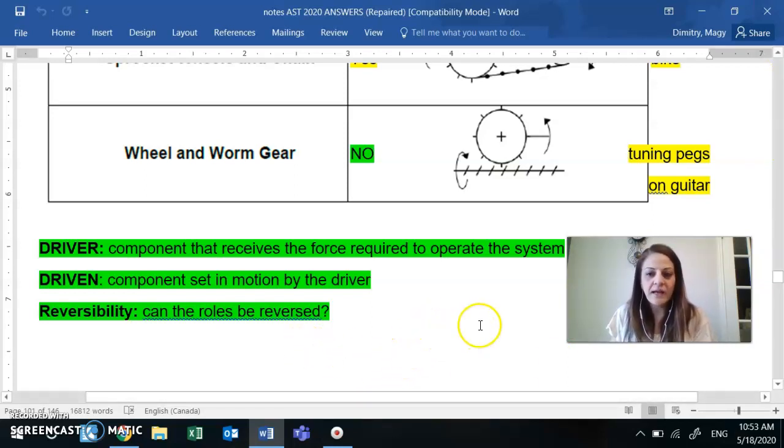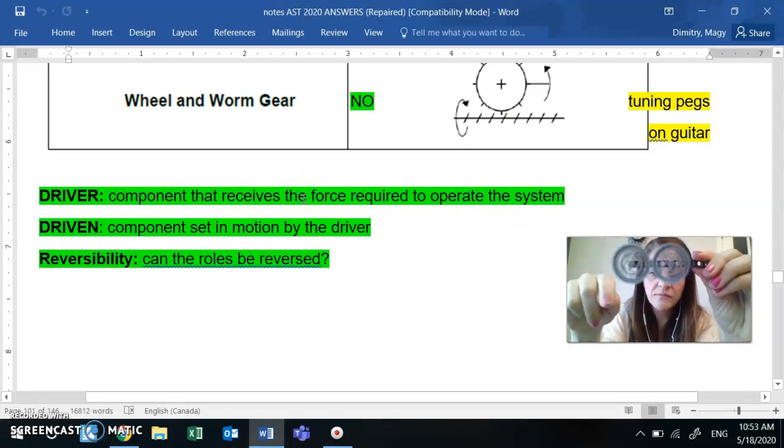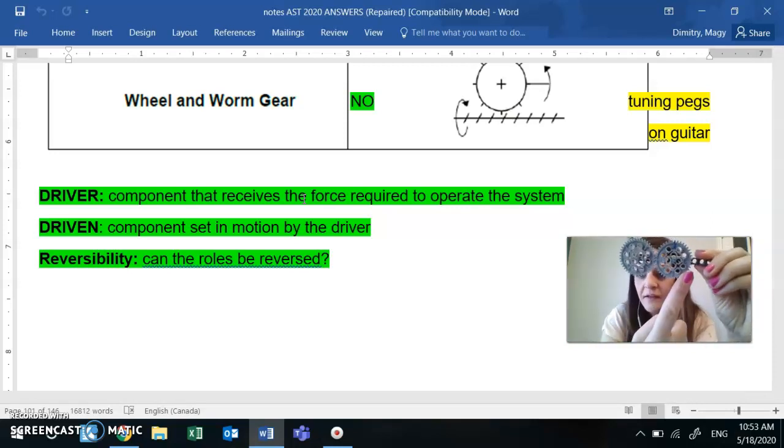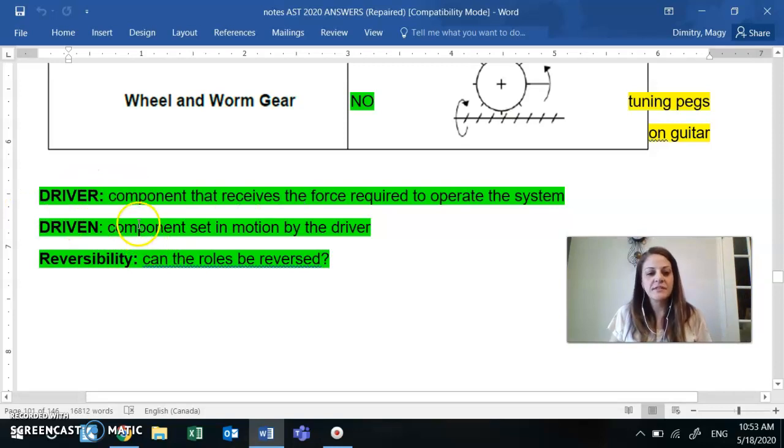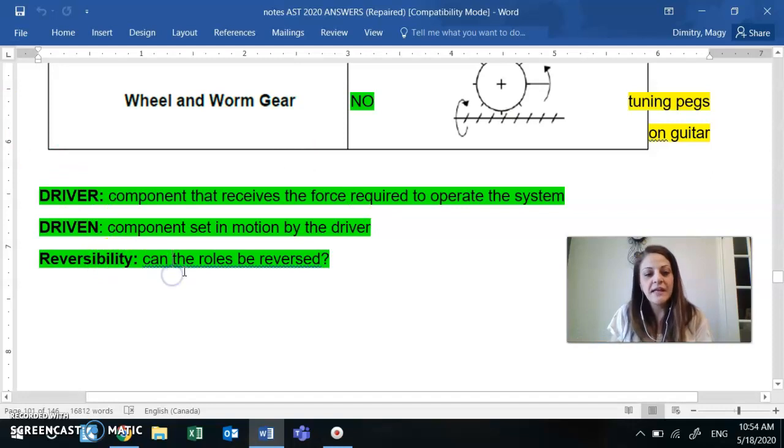So I'm asking you to also write this at the bottom. The driver is the component that receives the force. Again, over here, see I'm with my finger, so that makes this one the driver and this the driven. You got it? Okay. So driven is the component set in motion by the driver. Think of it as the passenger. He moves only because the driver moves.